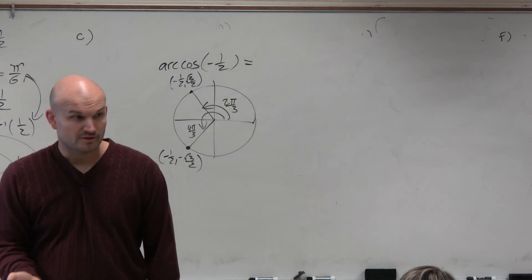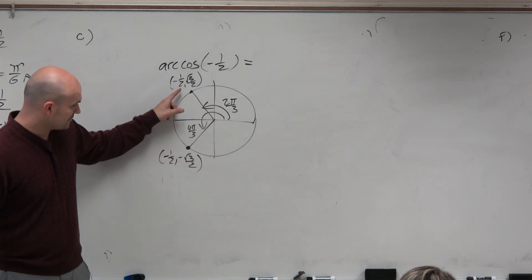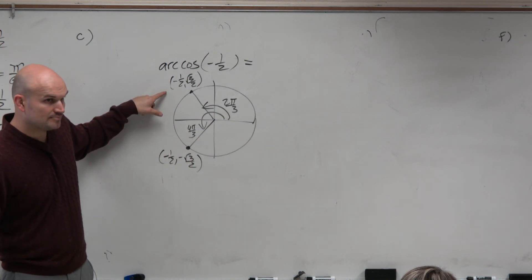And if you look at your unit circle, you can verify that for those two angles, those are the coordinate points that they cross on the unit circle.